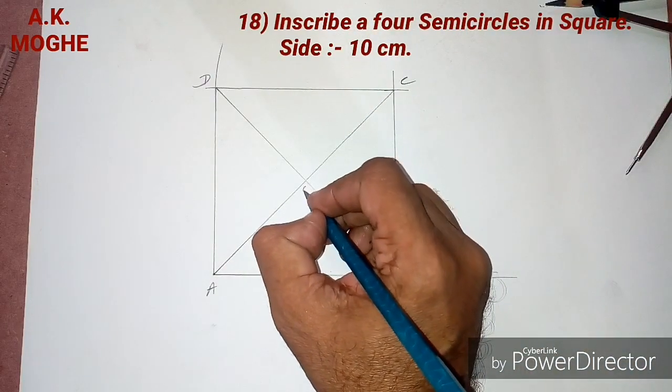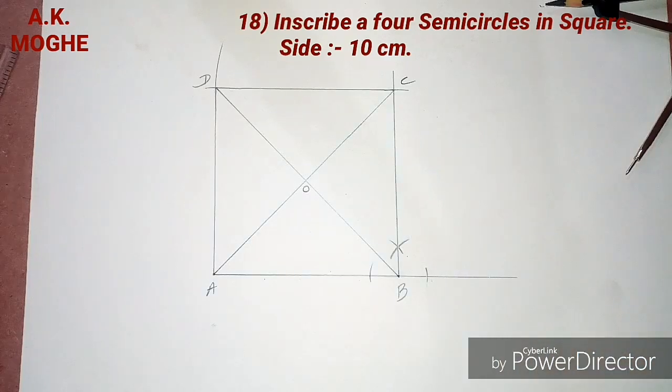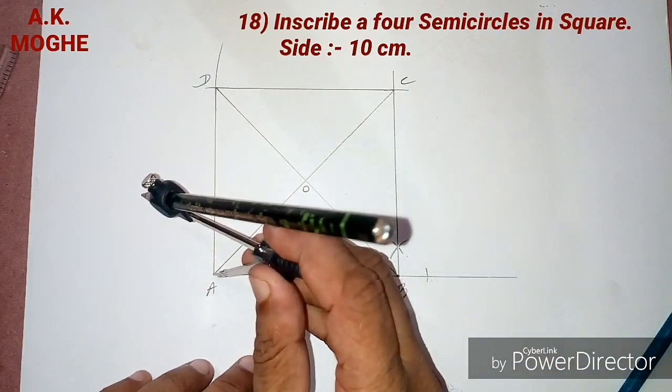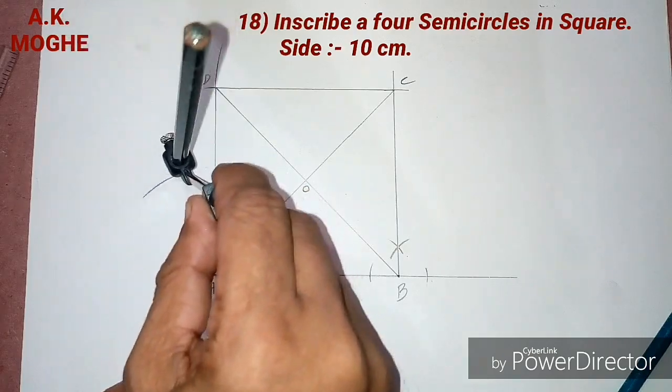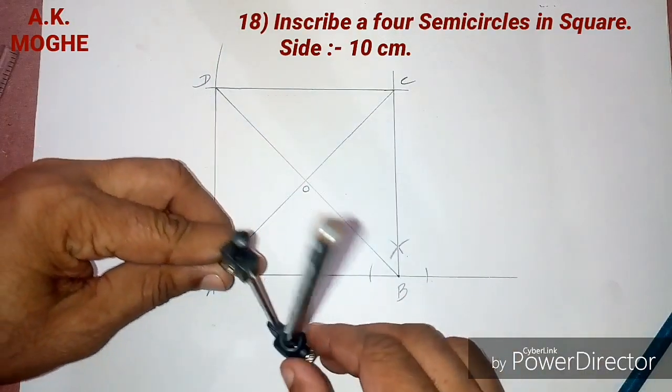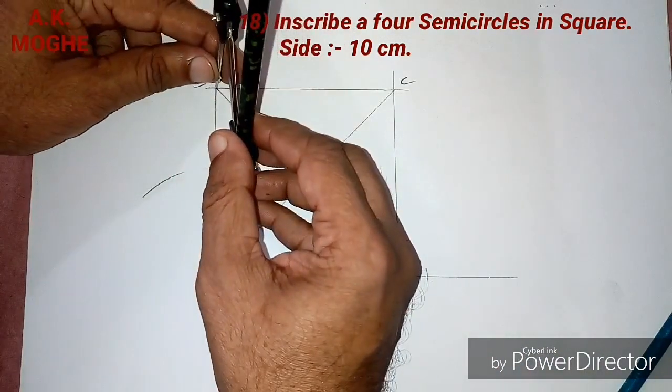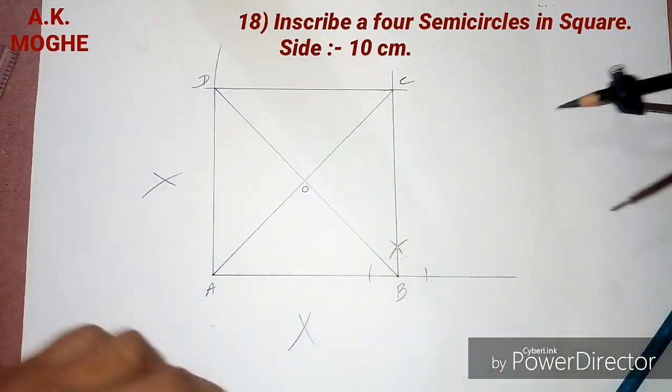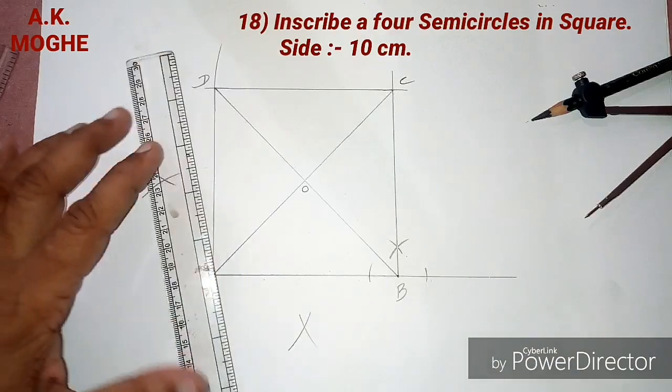The next step is now we have to draw a perpendicular bisector on each side of the square. So we are taking more than half measurement of a side of the square and we will join through the point O.